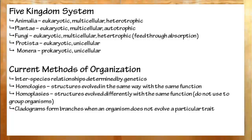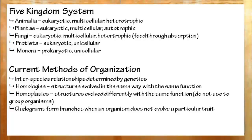Domains are super kingdoms, if you will. The three domains are: Eukarya, which includes all eukaryotes; Bacteria, the newer bacteria; and Archaea, the ancient bacteria. We form these groupings through evolutionary differences, which we can show on a cladogram. This uses homologies — structures that are the same and serve the same function.